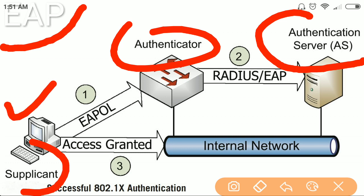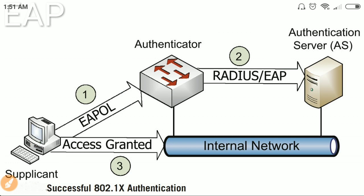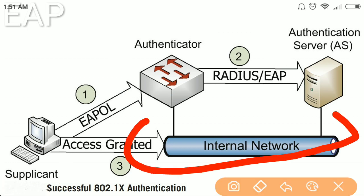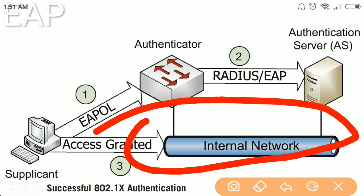The supplicant is the client who wants to connect to the network of an authenticator. The authenticator verifies the identity of the supplicant using the authentication server. If the authentication server verifies the identity of the supplicant, then the authenticator allows the supplicant access to the internal network of an organization.